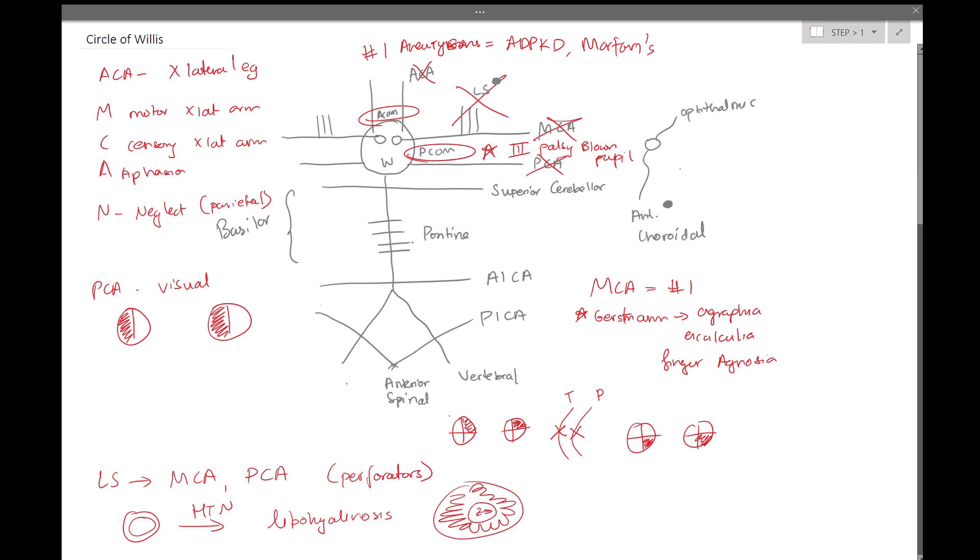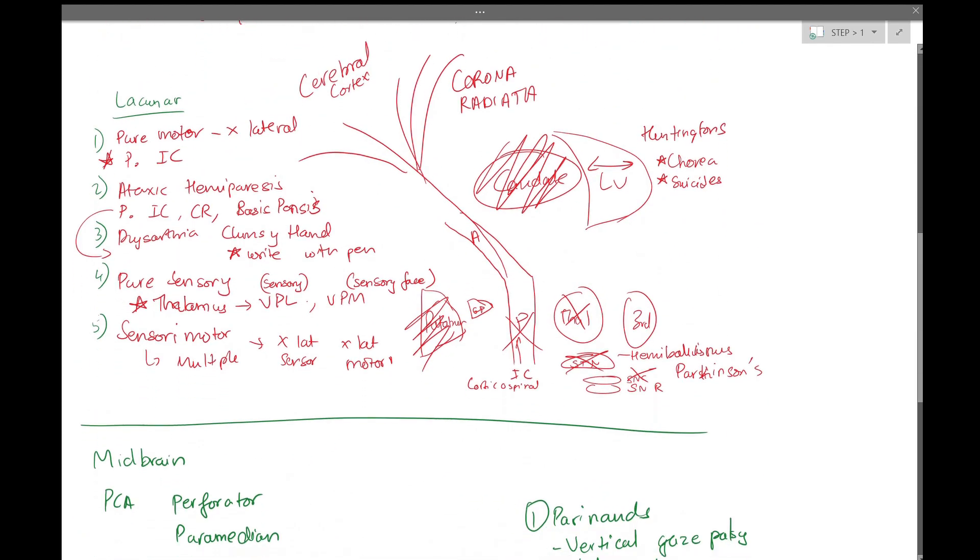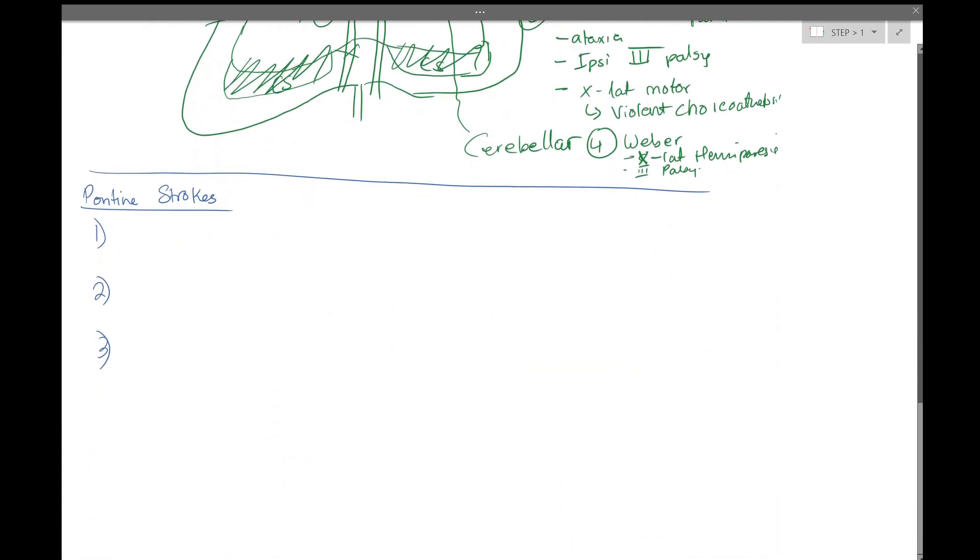Let's talk about the pontine strokes now. When we have a pontine stroke, we can remind ourselves again there were five deep brain strokes, four midbrain strokes, and there's going to be three pontine strokes. Once again, let's discuss some anatomy first.